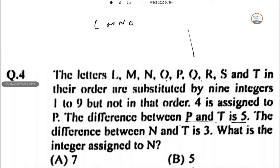So L, M, N, O, P, Q, R, S, T. So what we get in the first part? 4 is assigned to P. The difference between N and T is, N and T is this. The difference between P and T is 5. So P minus T is 5.